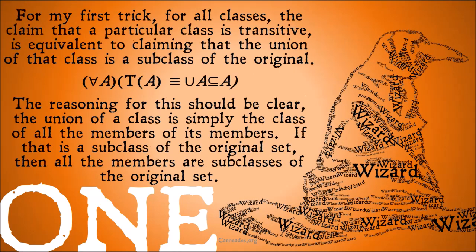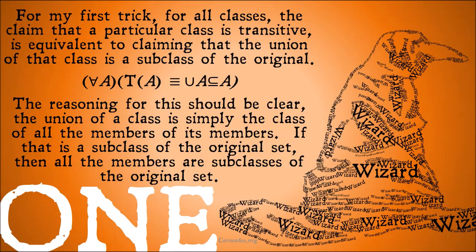For my first trick: for all classes, the claim that a particular class is transitive is equivalent to claiming that the union of that class is a subclass of the original class. The union of the class is simply the class of all the members of the members. If that is a subclass of the original set, then all the members are subclasses of the original set — in other words, the set is transitive.